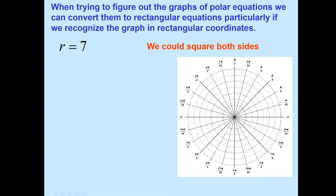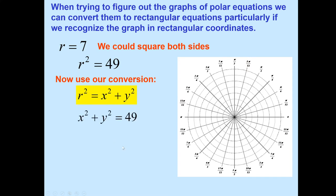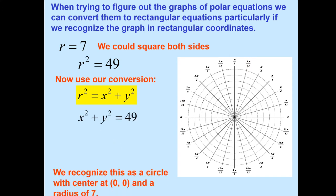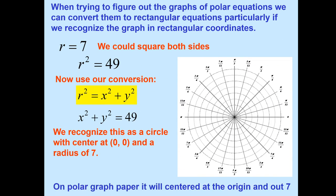Let's say we have r equals 7. That means the radius is 7. We can square both sides: r squared equals 49. Using the Pythagorean theorem, or the equation of a circle — the standard form with the origin at (0, 0) — we have r squared equals x squared plus y squared. So we can substitute in and recognize that the center is at (0, 0) and the radius is the square root of 49, which is 7. So this is just a circle.